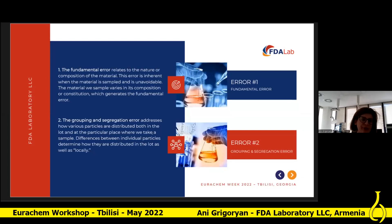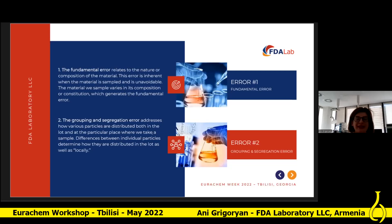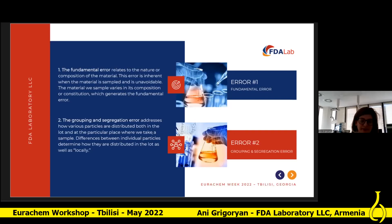The first error is the fundamental error, which is related to the nature and composition of the material. This error occurs when the material is sampled and is unavoidable. When we sample material and its composition or constitution varies, we generate the fundamental error. For example, in our screening process for determination of pesticide residues in food additives and supplements, we include different types such as tablets and capsules. These components have different particle size, particle shape, surface charges, and other differences. This type of material variance is called composition heterogeneity. Even with perfect sampling, there is no truly representative or accurate sample.